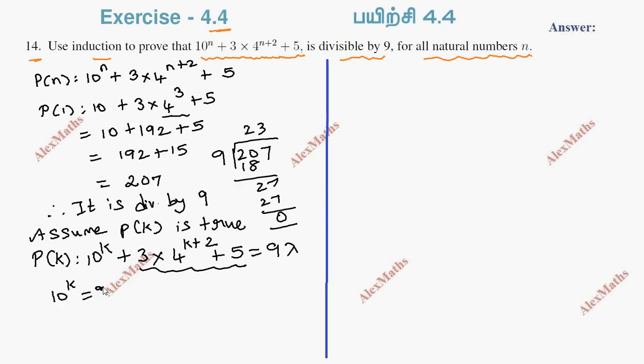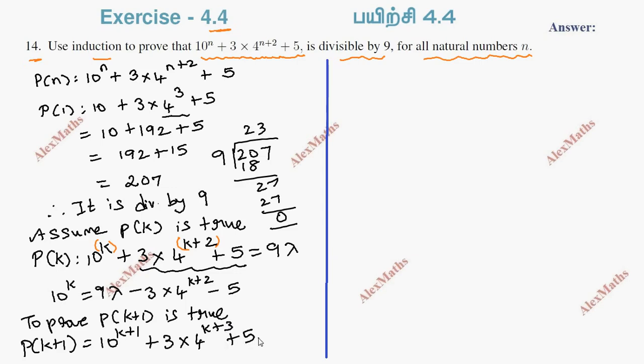Now prove P(k+1) is true. So P(k+1): 10^(k+1) + 3 × 4^(k+3) + 5.